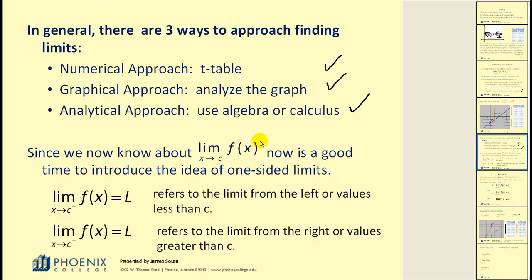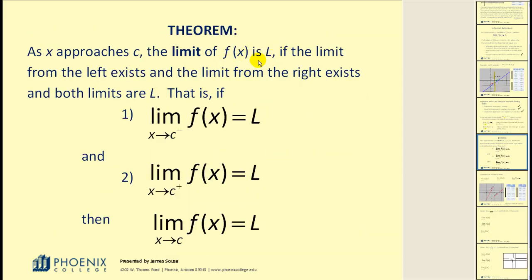Since we now know about limit notation and roughly what it means, it is a good time to introduce the idea of one-sided limits. Looking at the standard limit notation as x approaches c, the only difference with one-sided limits is a negative sign or a positive sign in the upper right-hand corner of c. This notation refers to the limit from the left — from values less than c — or the limit from the right. This theorem follows: the limit of f of x as x approaches c equals L if the limit from the left exists and the limit from the right exists and they're both equal to L.